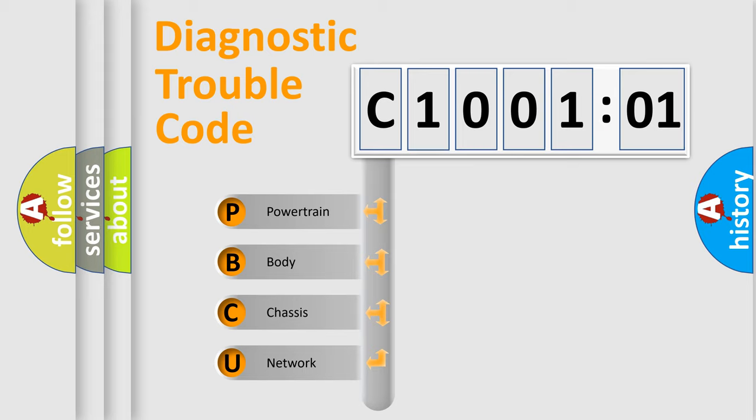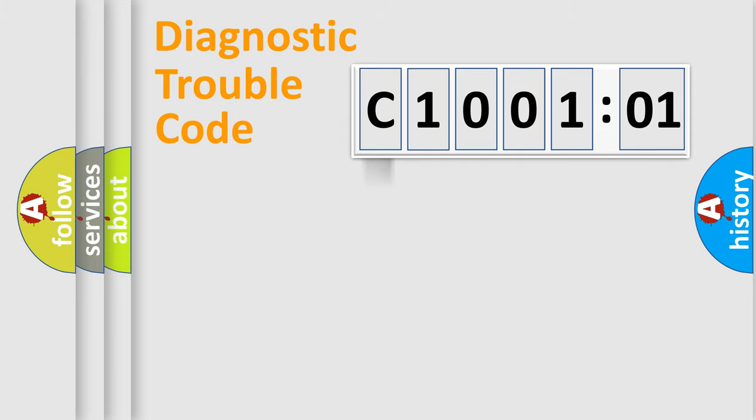We divide the electric system of an automobile into four basic units: Powertrain, Body, Chassis, and Network. This distribution is defined in the first character code.